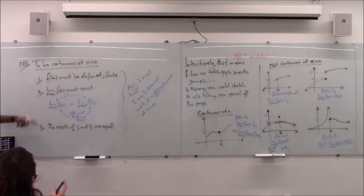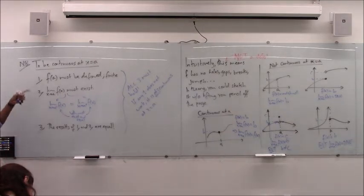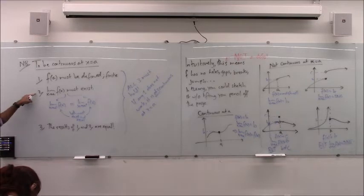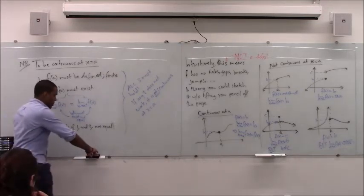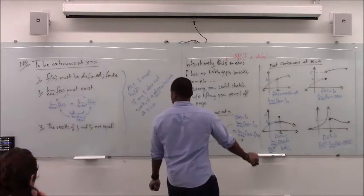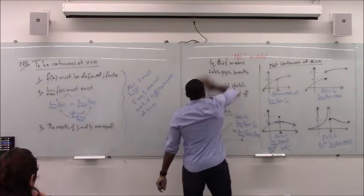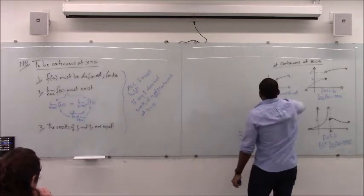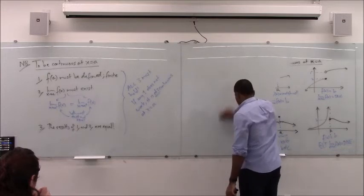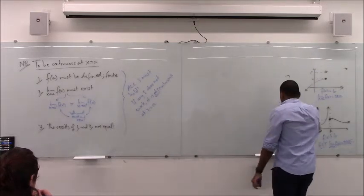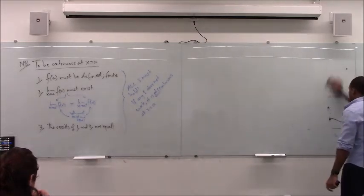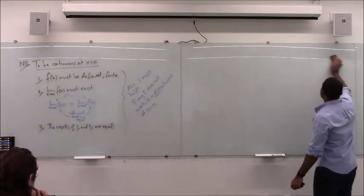You can think of these as steps to follow. If I ever ask whether a function is continuous or where it's continuous, go through the steps: check the value of the function, check what the limit is at that point, and check if those two are the same. If any one of these fails, you lose continuity. Continuity is important because a lot of what we want to do in calculus — the rate problem, the area problem — we can only do with continuous functions. Where a function is not continuous, we can't do that.